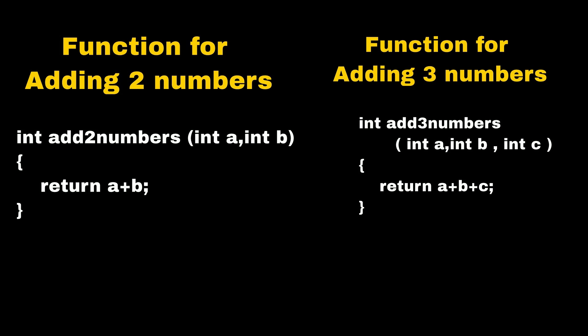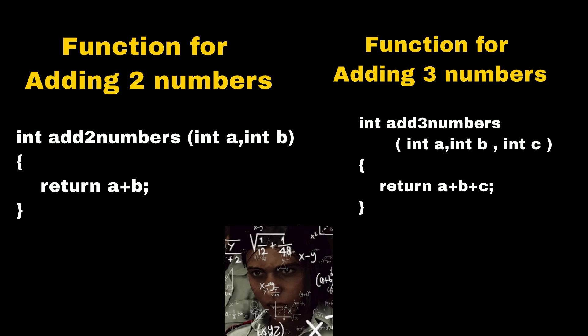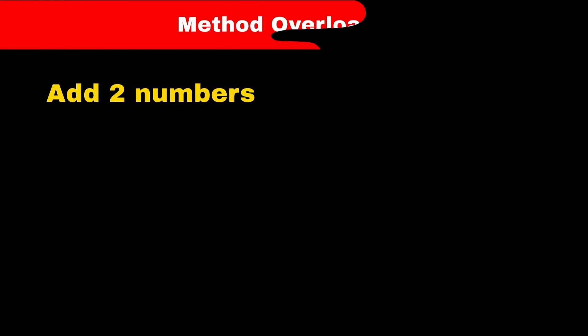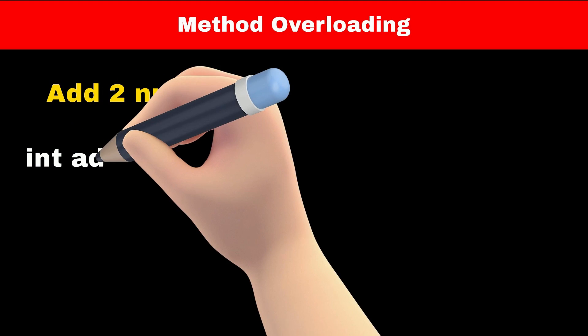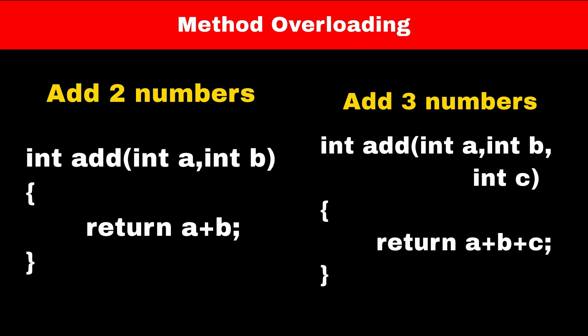Now you can see that we are just giving different names to these functions, which is confusing because in the end they are all just adding numbers. So instead of giving different names, we can define functions with the same name but with different parameters. For adding two numbers we define a function named 'add' with two parameters, and for adding three numbers we define another function also named 'add' with three parameters.